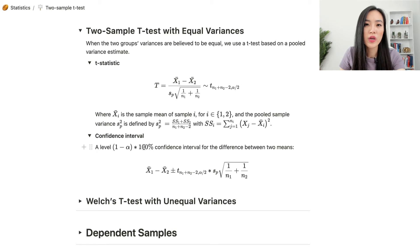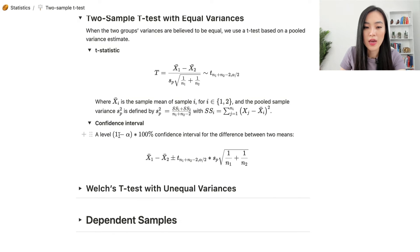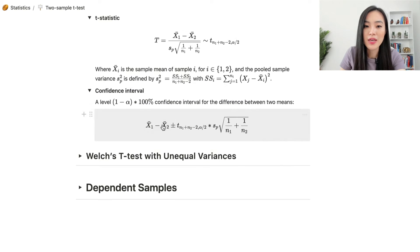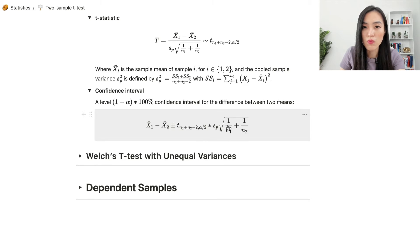We can also derive the confidence interval for two-sample t-tests with equal variances. The (1 - alpha) × 100% confidence interval for the difference between two means is: (x1-bar - x2-bar) ± t(n1 + n2 - 2, alpha/2) × sp × sqrt(1/n1 + 1/n2). The first part is the point estimate and the second part is the margin of error.